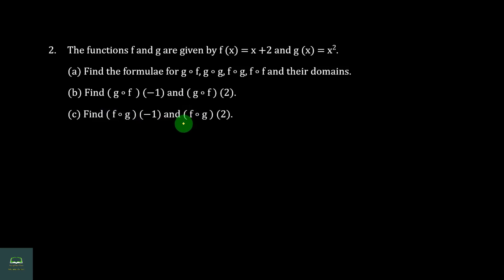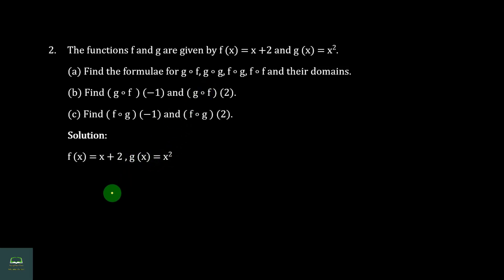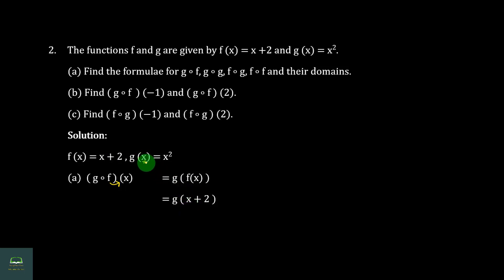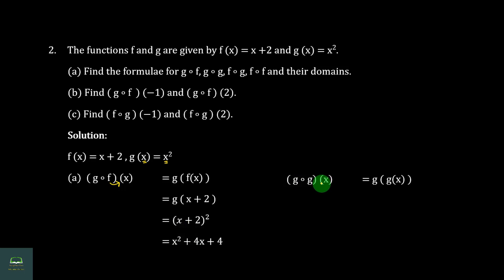This is the solution. The formula for g∘f: g∘f(x) = g(f(x)) = g(x+2). Since g(x) = x squared, g(x+2) = (x+2) squared.